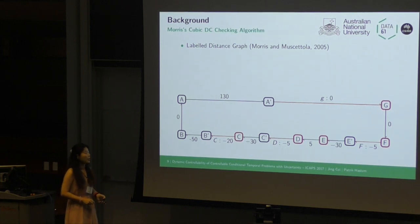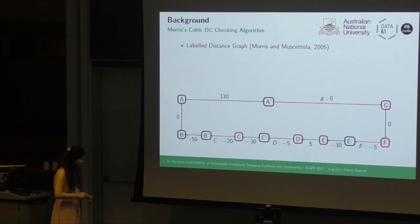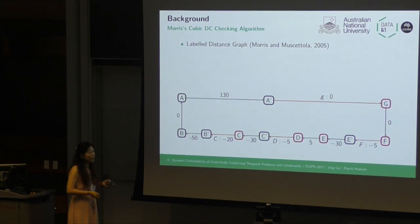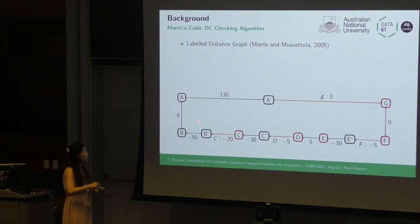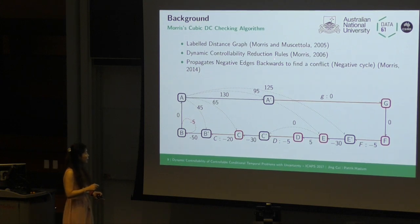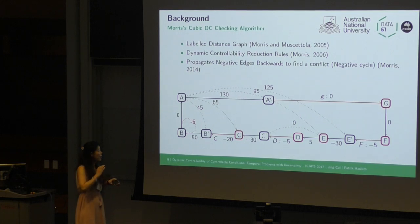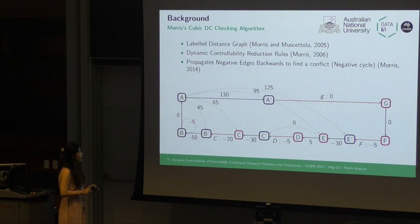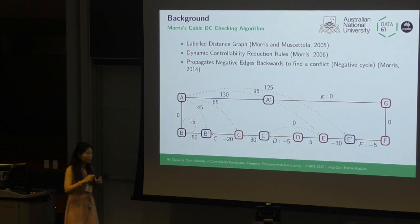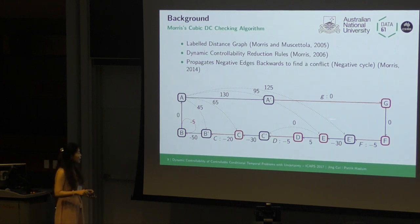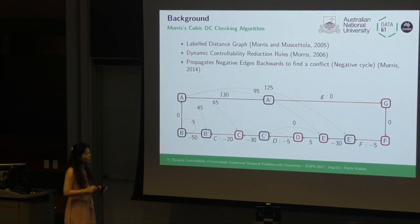There are many DC checking algorithms. I will introduce Morris' cubic algorithm, which we also use in our method. In this algorithm, they first transfer the STPU into a labeled distance graph where each edge has only one weight, rather than lower and upper bounds. There are dynamic controllability reduction rules — bound propagations based on dynamic controllability. In the cubic algorithm, they propagate negative edges backwards to find a conflict, which is a negative cycle in the labeled distance graph. In this example, calling the back propagation from here, the dashed lines are added links based on reduction rules, and we can finally find a negative cycle, which is a conflict.